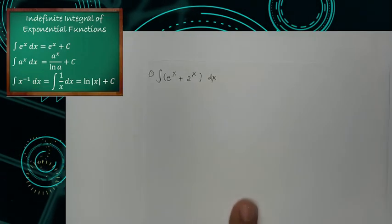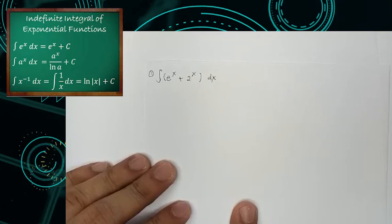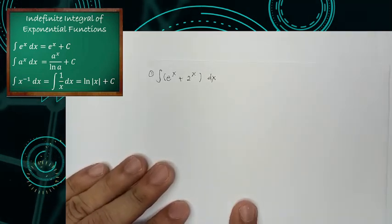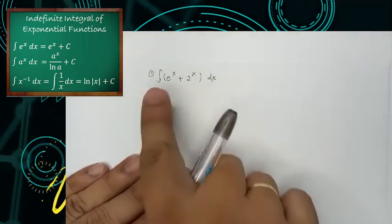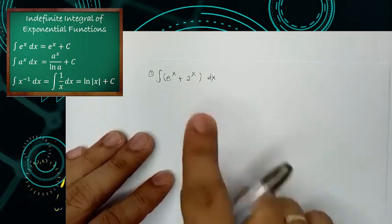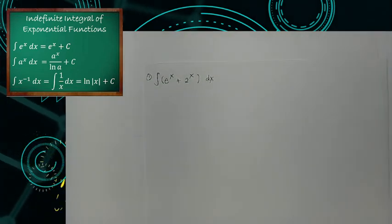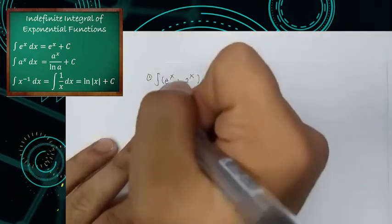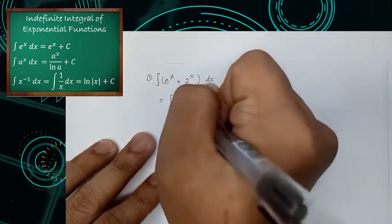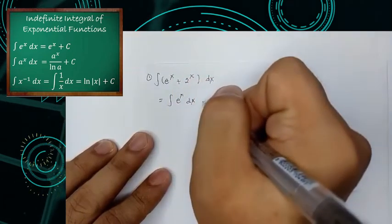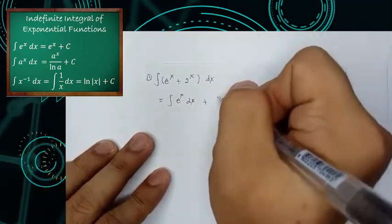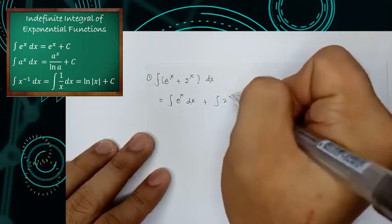We have here the first example: the integral of the quantity e raised to x plus 2 raised to x, quantity dx. You notice we have two terms, so therefore we need to get their separate integrals. We have the integral of e raised to x dx, and the second term, the integral of 2 raised to x dx.